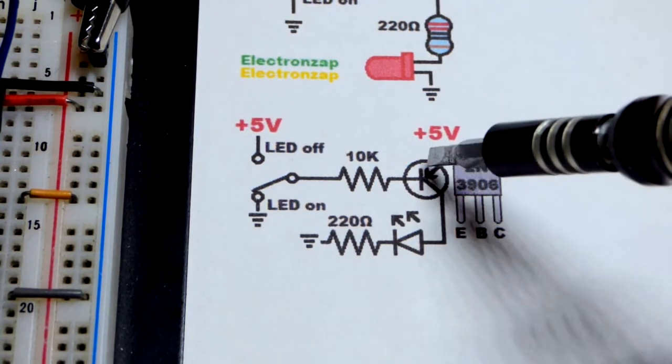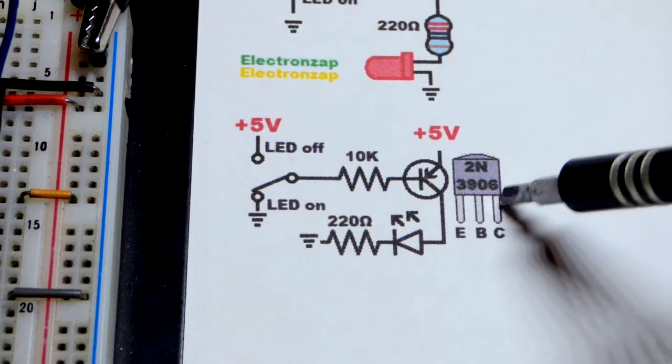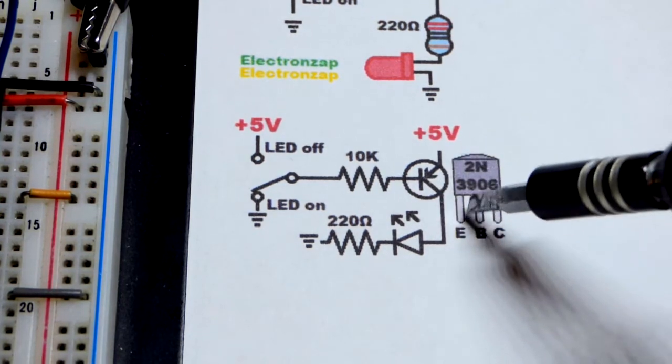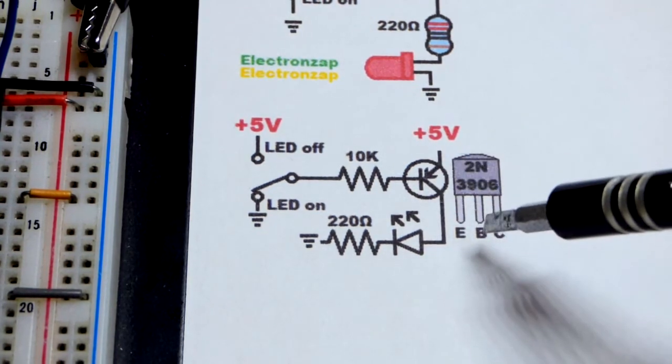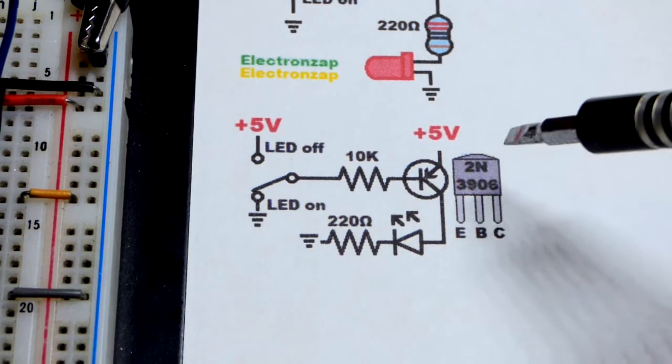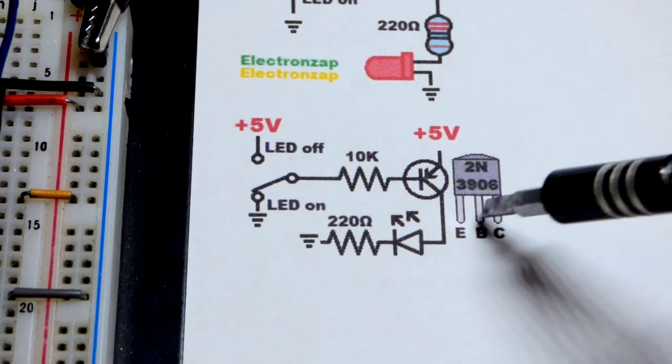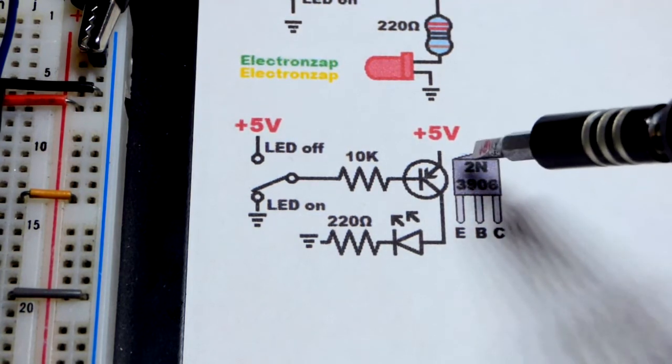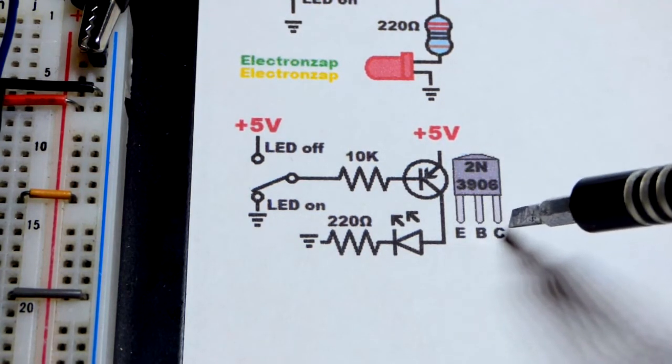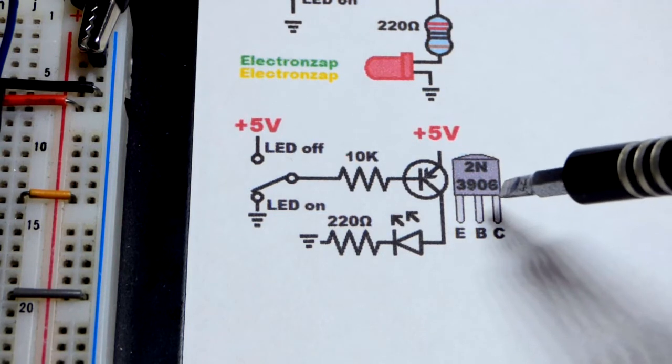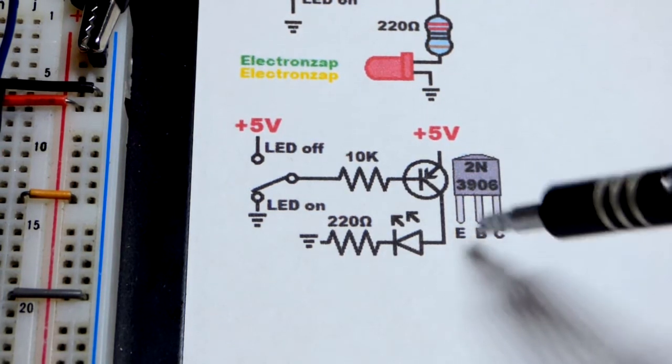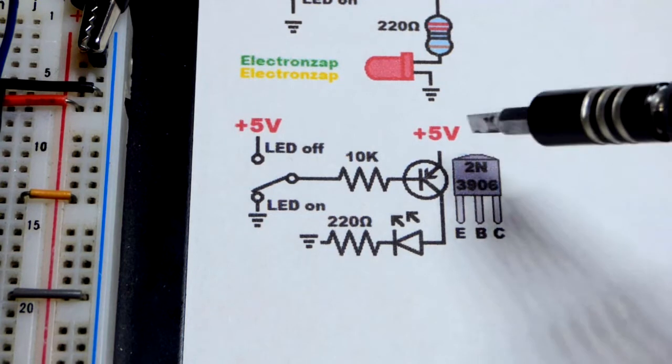Emitter is where the arrow is. For the PNP bipolar junction transistor like the 2N3906, you can use any PNP bipolar junction transistor as a switch. And some of them you may need a lower value resistor there. But in any case, the pin layout may not be the same. If it's 2N, it probably is the same. If it's a bipolar junction transistor, if it's not 2N, good chance it has a different pin layout. So check the data sheet for it.